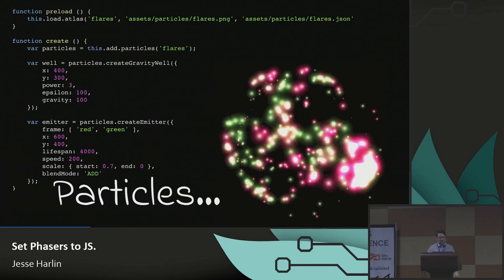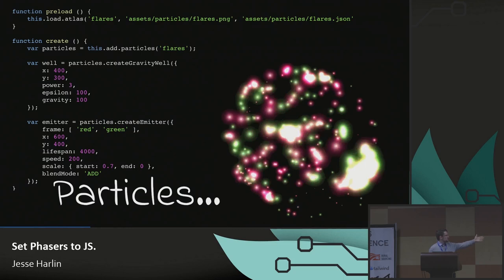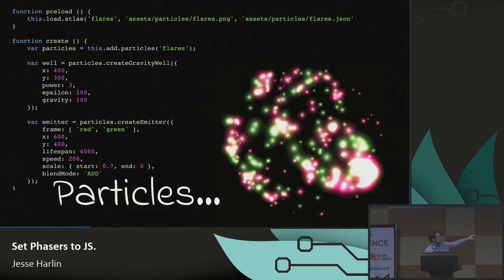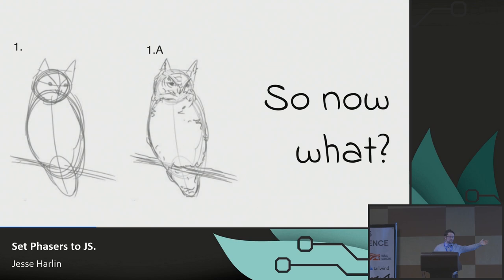Phaser has a really decent particle system, and really any game engine worth its salt has this. You declare it with JSON, then you create an emitter, and boom — you've got particles going everywhere. The flare image is literally just a fuzzy dot; you can make particles out of any image you want. There's your beginner intro to Phaser. You can go peruse the docs and examples. This is where we start talking about that part in between the first part of the owl and the owl — owl 1A, if you will.